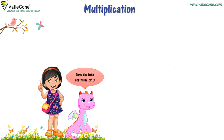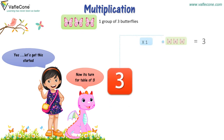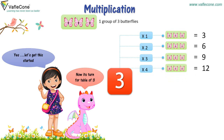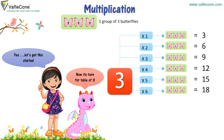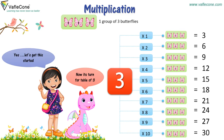Now it's the turn for the table of 3. Yes, let's get this started. One group of 3 butterflies. 3 into 1 is equal to 3. 3 into 2 is equal to 6. 3 into 3 is equal to 9. 3 into 4 is equal to 12. 3 into 5 is equal to 15. 3 into 6 is equal to 18. 3 into 7 is equal to 21. 3 into 8 is equal to 24. 3 into 9 is equal to 27. 3 into 10 is equal to 30.